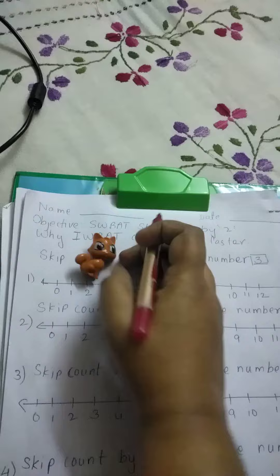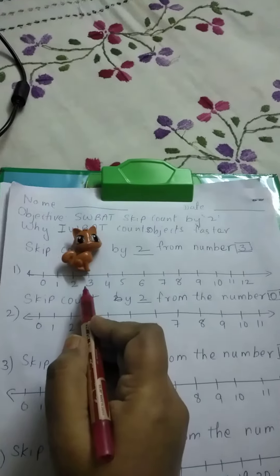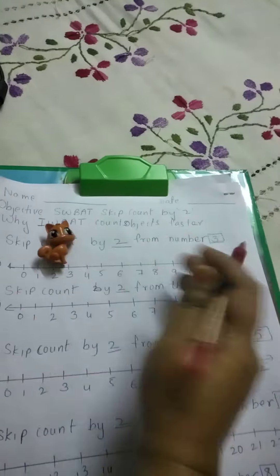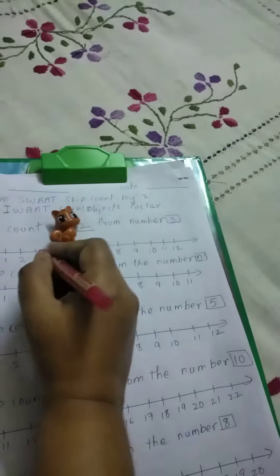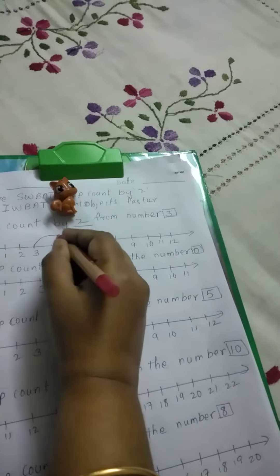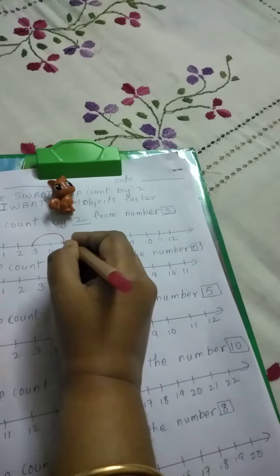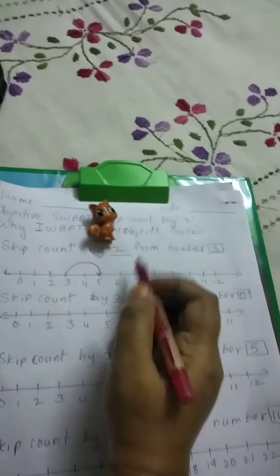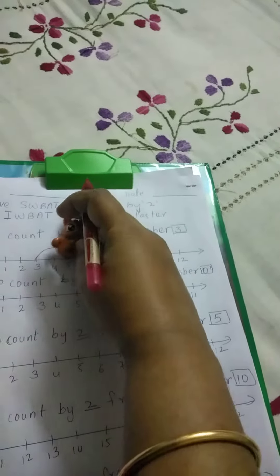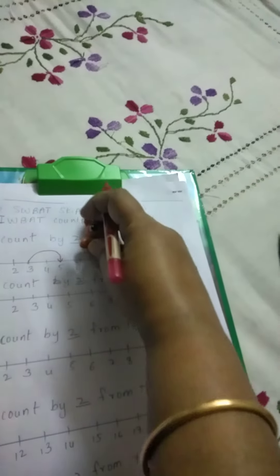So from number 3, kitty has to skip count by 2. This is 1, 2, right? So kitty is jumping from 3 to 5. Then kitty is jumping 2 more steps from 5 to 1, 2, that is 7.